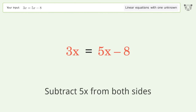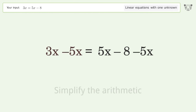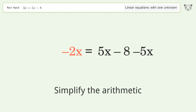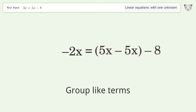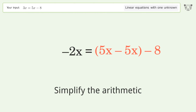Subtract 5x from both sides. Simplify the arithmetic. Group like terms. Simplify the arithmetic again.